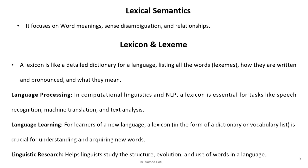A lexicon is like a detailed dictionary for a language, listing all the words, how they are written and pronounced, and what they mean. In computational linguistics and NLP, a lexicon is essential for tasks such as speech recognition, machine translation, and text analysis. It is also useful for language learning and linguistic research, helping linguists study the structure, evolution, and usage of words.